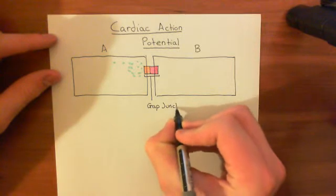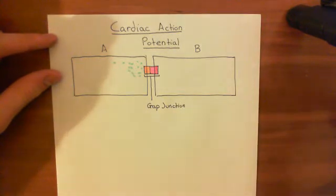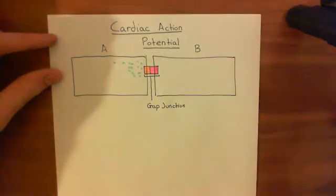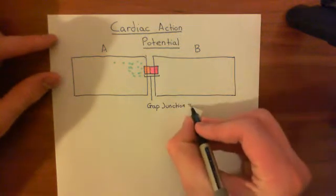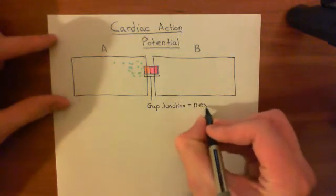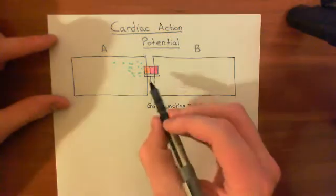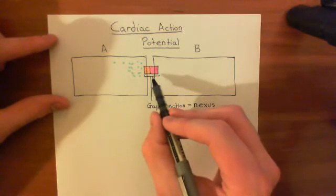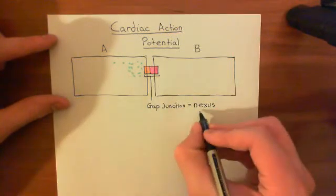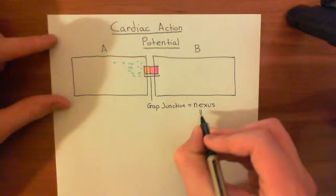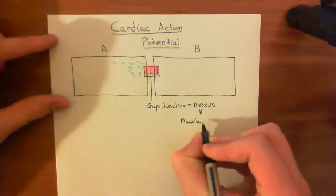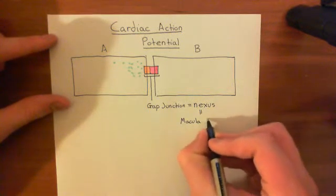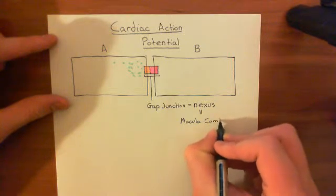There are other names you will occasionally hear people use for gap junctions. You might hear them called nexus. Or you can also hear it referred to as a macula communicans, meaning a spot of communication — just a point of communication between two adjacent cardiomyocytes.